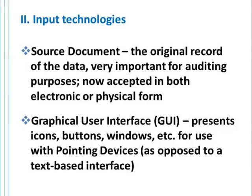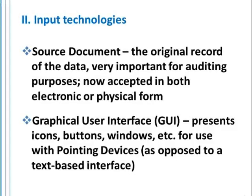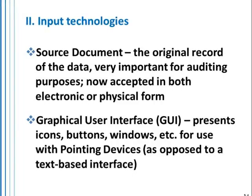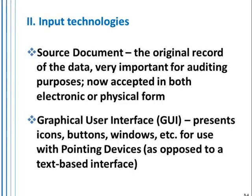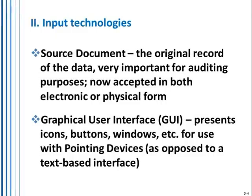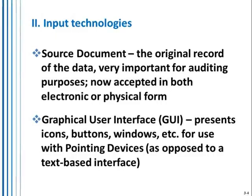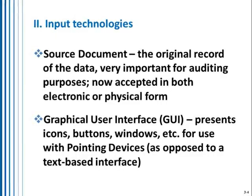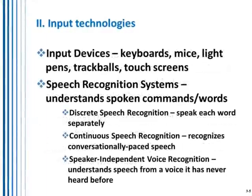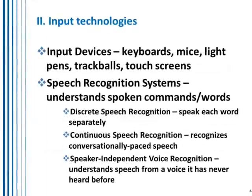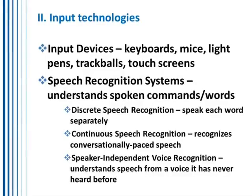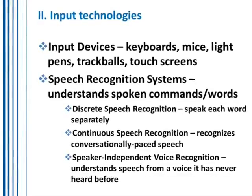The graphical user interface is the most notable output peripheral device, usually on our screen or what we call a pane of glass, which represents all the information being presented to you visually. We have other input devices like your keyboard, mice, trackballs, pens, and touch screens.